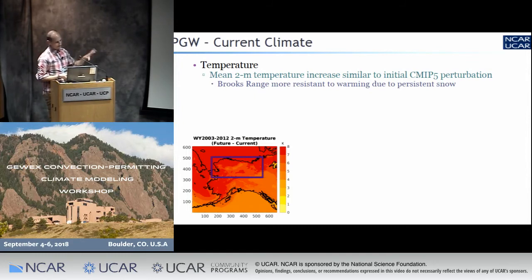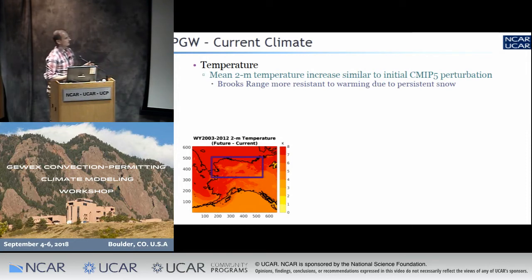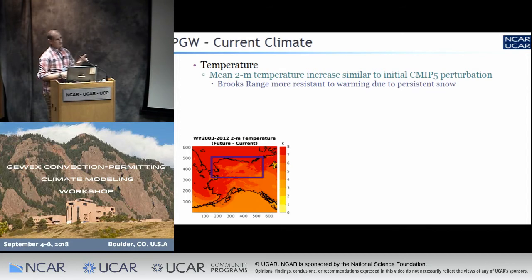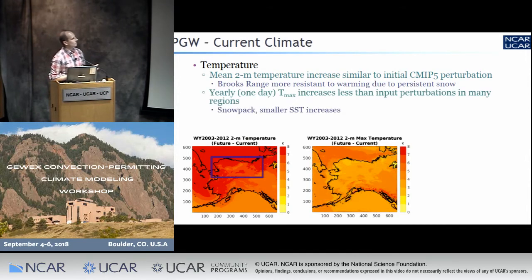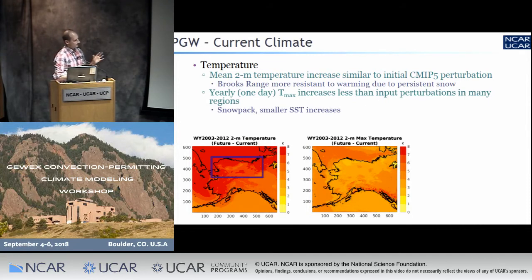As far as some cursory results, these are all consistent with what we've seen so far. This is annual mean 2-meter temperature change. You immediately see that regions keeping snow most of the year are more resistant to warming — the Brooks Range highlights here, and near Denali — slightly less warming because they're keeping snow through more of the year.